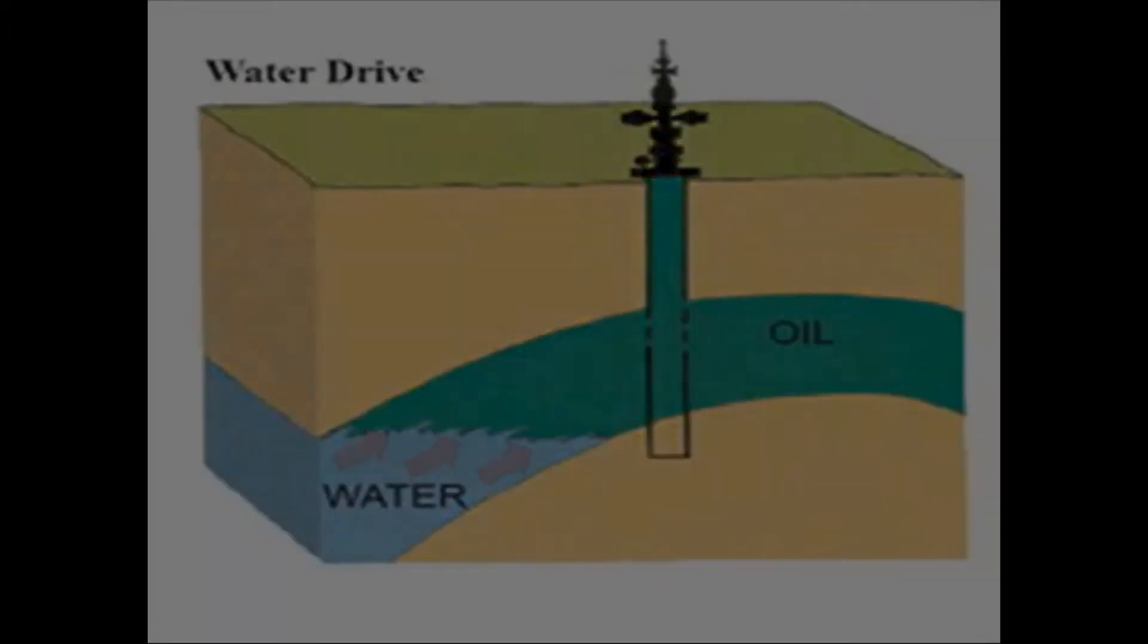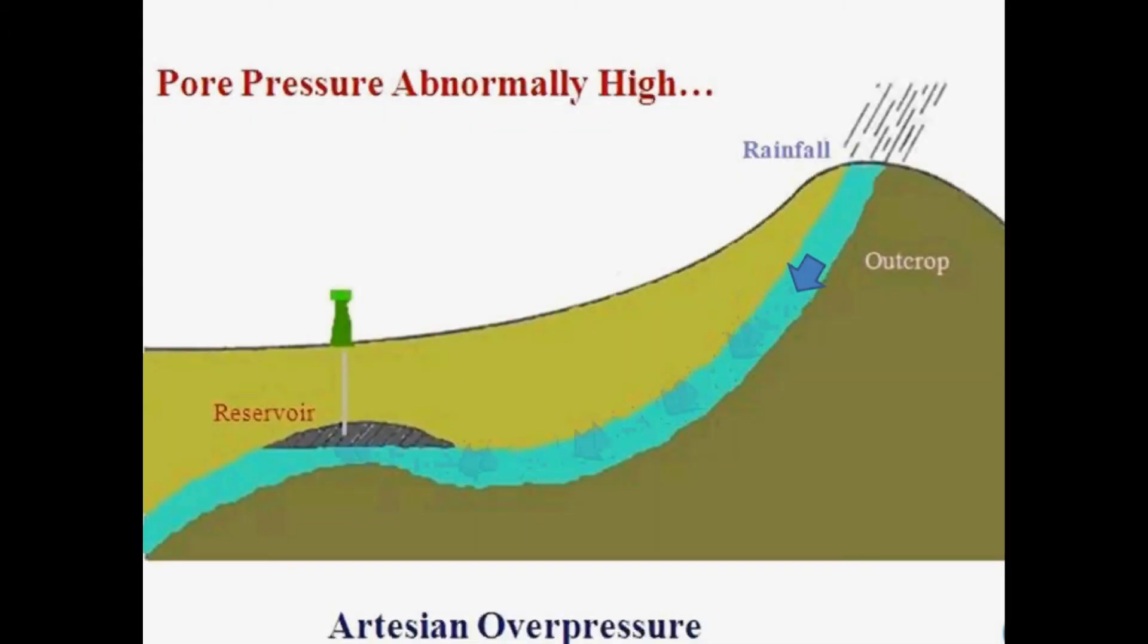If you remember from chapter 2 when we discussed abnormal pressure, we looked at an artesian flow. There we saw that the water was constantly replenished by rain water at the surface, which then flowed down into the reservoir. The weight of the water column as it pushed down generated pressure on the accumulated oil in the trap. Releasing this pressure through drilling pushed the oil out of the trap.